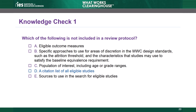D is the correct answer. The review protocol does not include a citation list of all eligible studies. Instead, the protocol identifies the criteria studies must meet to be eligible. After conducting a literature search using the search terms and methods outlined in the protocol, the WWC screens studies for eligibility using the review protocol. A, B, C, and E are incorrect answers. The review protocol describes the scope and parameters of the review, including eligible outcome measures, the attrition threshold, the population of interest, and details related to the literature search.